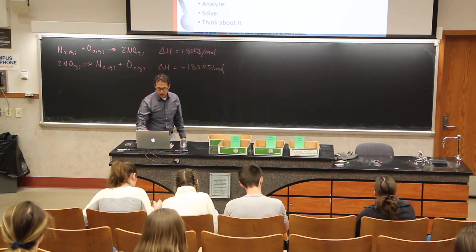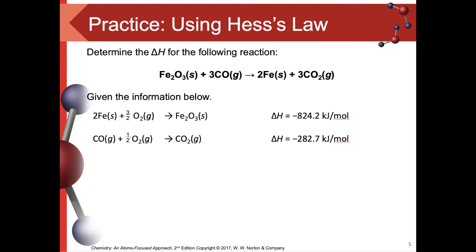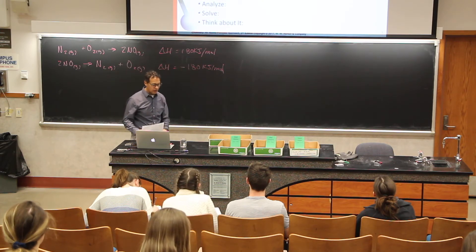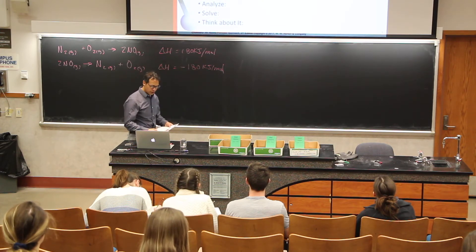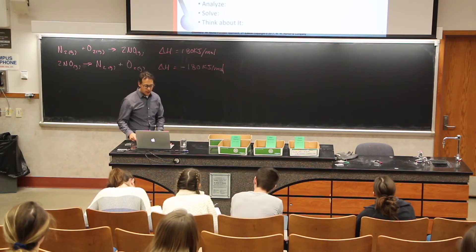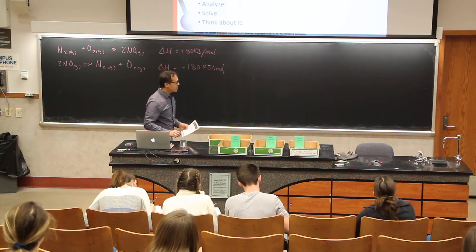Let's try an actual problem. Here's a reaction giving us iron ore — iron three oxide — plus carbon monoxide, giving us iron and carbon dioxide. This is a reaction used in the smelting process where they take iron ore out of the ground and react it with carbon monoxide to give us iron for making things like automobiles. We're going to manipulate two equations to equal that top equation.